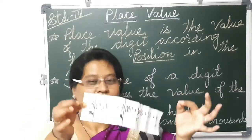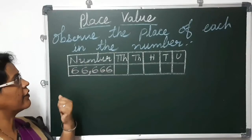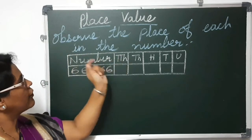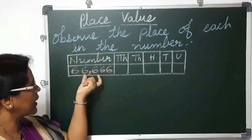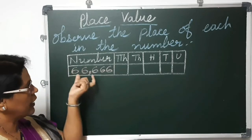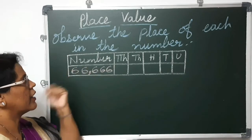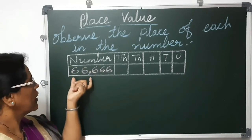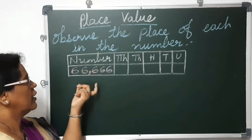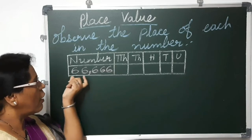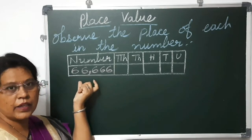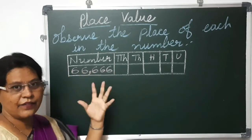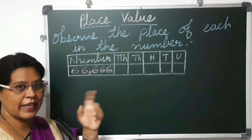We will start with the next topic. Look here friends — place value. Observe the place of each digit in the number. Here we have taken one number where all the digits are the same: 6, 6, 6, 6, 6. It is a 5 digit number and all the digits are the same.